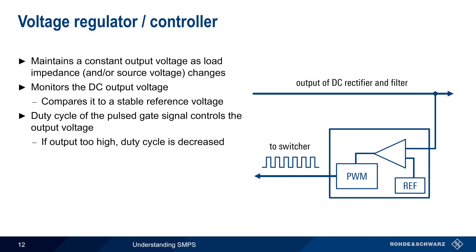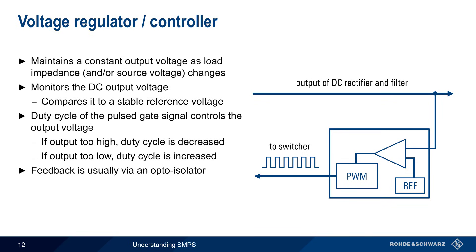And if it detects that the output is too low, it will increase the duty cycle of the pulse signal. This is often referred to as pulse width modulation, since information is being conveyed by varying the width of the pulses. Note that this feedback signal is usually transmitted by means of an optocoupler or optoisolator for electrical isolation and safety reasons.